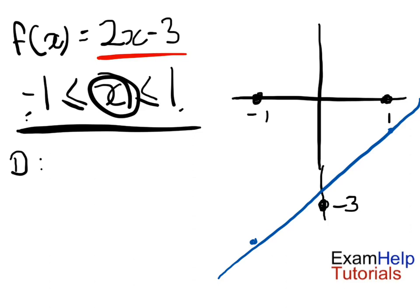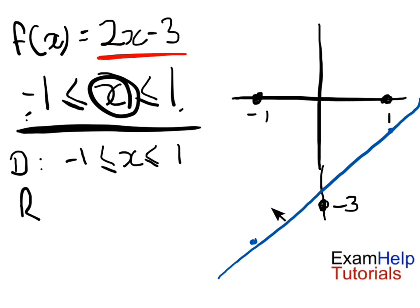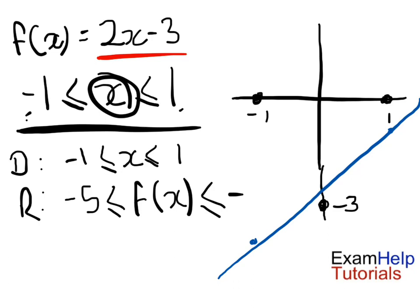So our domain D is that set of values. For the range, between x equals minus 1 and x equals 1, the point is (minus 1, minus 5) and (1, minus 1). Therefore our range is minus 5 less than or equal to f of x, less than or equal to minus 1 — so it's between minus 5 and minus 1. That's a simple example.